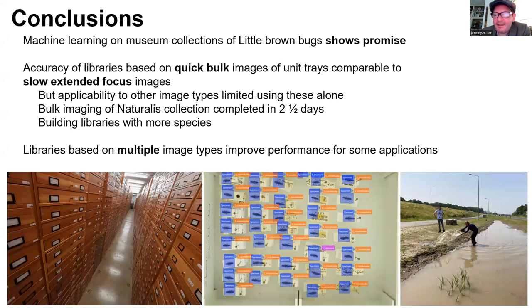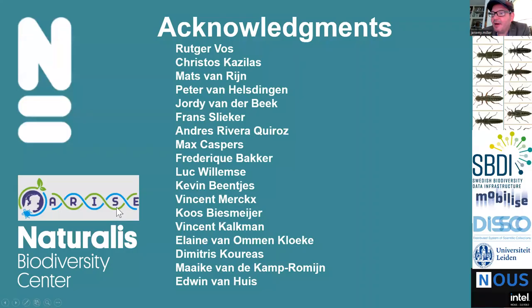There are indications that building libraries based on multiple image types may be the key to developing a robust and broadly useful taxonomic tool. And that's what I wanted to say about little brown bugs. Thank you for your attention.